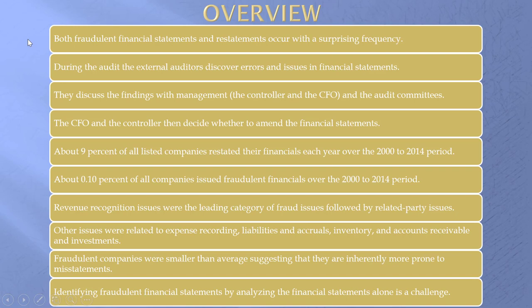Both fraudulent financial statements and restatements occur. Restatements are corrections of past financial statements, and they occur with a surprising frequency. During the audit, the external auditors discover errors and issues, discuss them with management, and management then decides whether to amend the financial statements or not. One of the considerations would be how material, how large, the error or misstatement is. About 9% of all listed companies restated their financial statements each year from 2000 to 2014. So with all these safeguards, 10% restate.